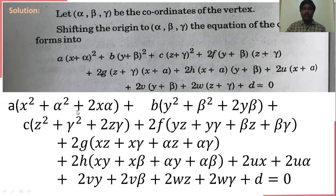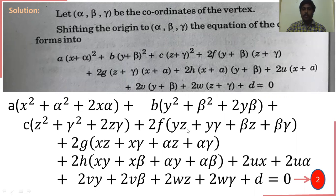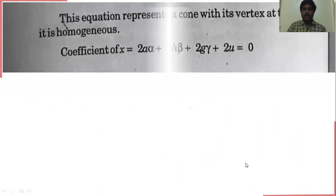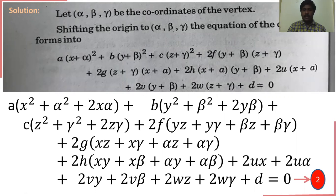We expand the given equation: (x + α)² = x² + α² + 2xα. Similarly for (y + β)² and (z + γ)², and the product (y + β)(z + γ) = yz + yγ + βz + βγ. The same mechanism is worked out for all cross terms. Now we combine equation 2 and equation 1 by equating the terms.